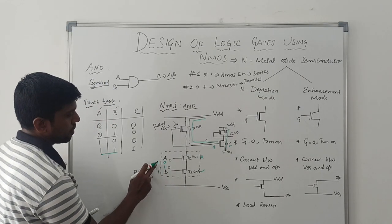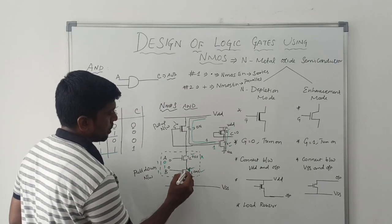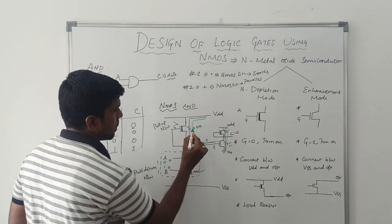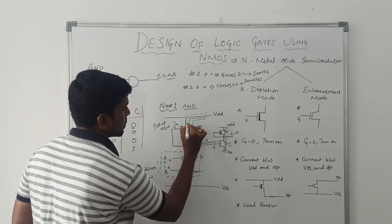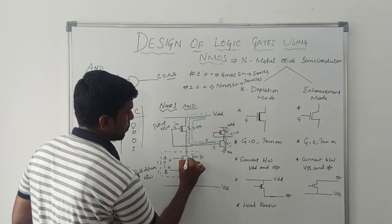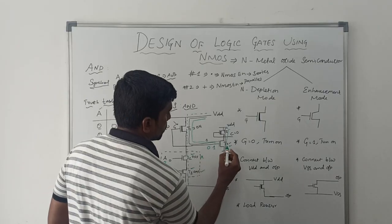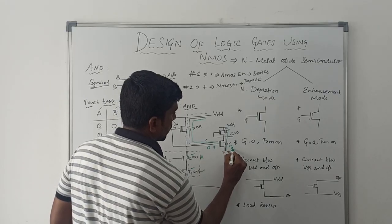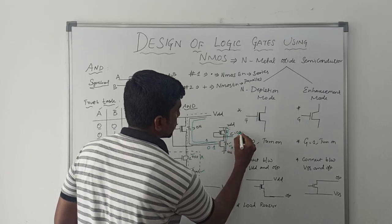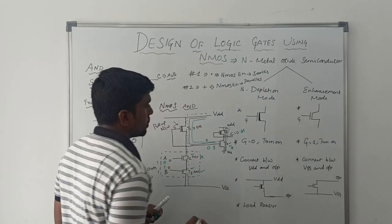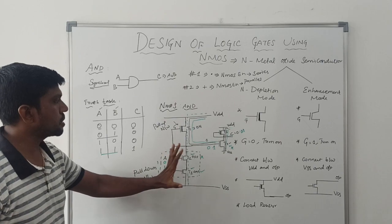For the final input combination, both values are 1: A equals 1, B equals 1. In this case, both transistors T2 and T3 turn on. VDD is directly connected to VSS, so the output of this circuit is 0. Therefore T4 transistor is turned off, VDD connects directly to the output, and C is set to 1. I verified this result with the truth table, confirming the NMOS logic circuit for AND operation is correct.